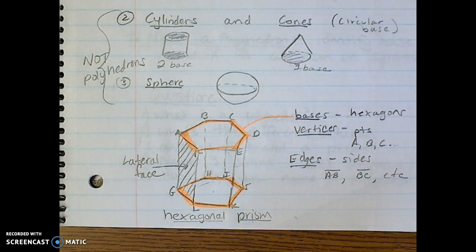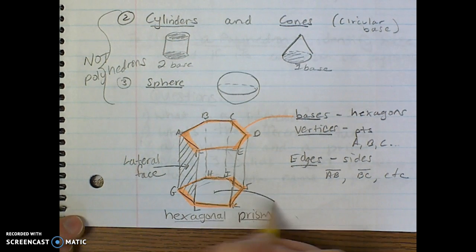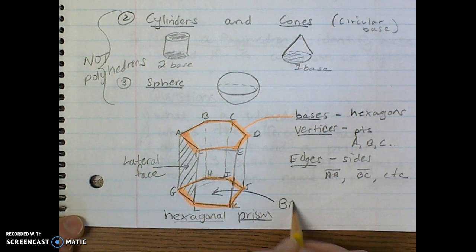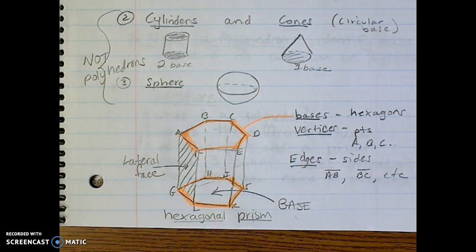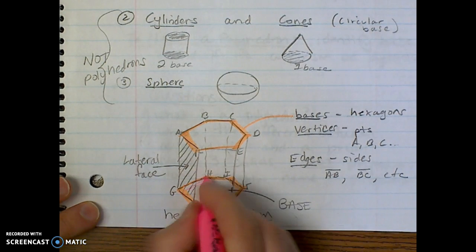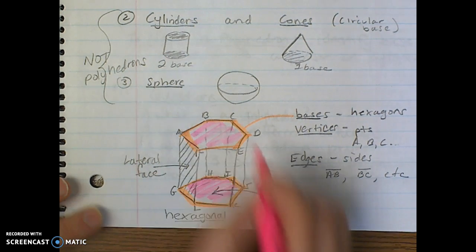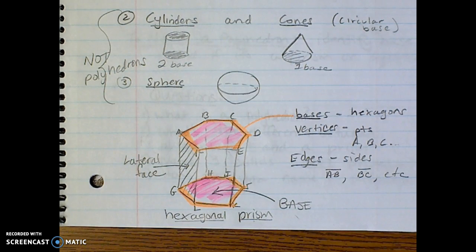On this prism, we have a couple of different parts. We've got the base shape, right? So I'll highlight that base, which is the hexagon here and hexagon there. There's two bases on a prism.